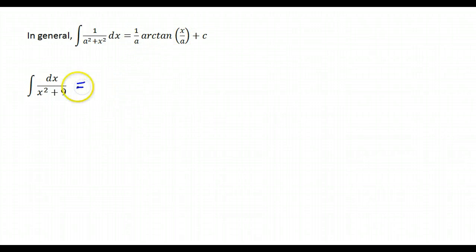So if we apply that rule to this little problem right here, a squared is 9, so that's our denominator. So we fit it into this pattern and I get 1 over 3, arc tan x over 3 plus c. So you need to memorize that one right there, that'll help you out a lot.